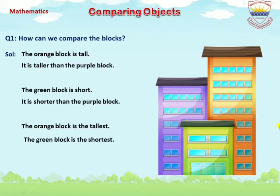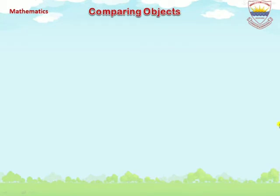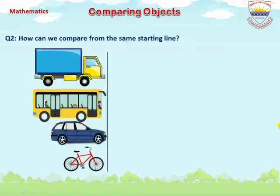The orange block is the tallest and the green block is the shortest. As you see in the picture, we compare these blocks according to their length easily. Question 2: How can we compare from the same starting line? Look at the picture — there are different types of vehicles. We compare them according to their length, and this is the starting line.